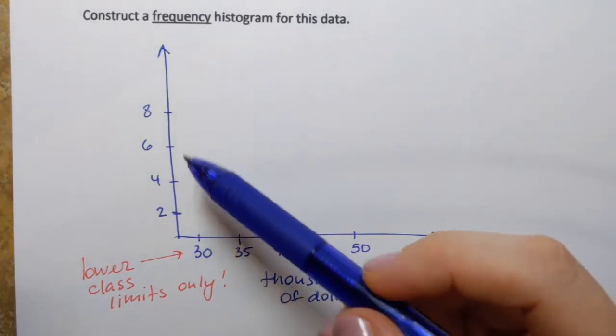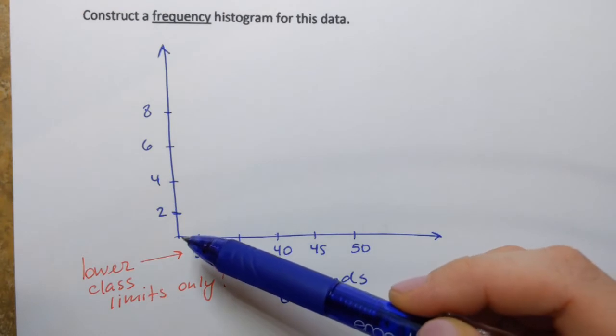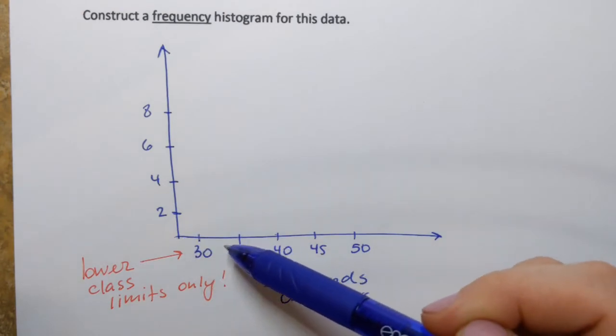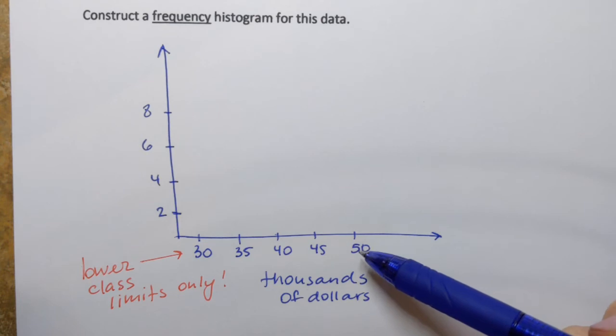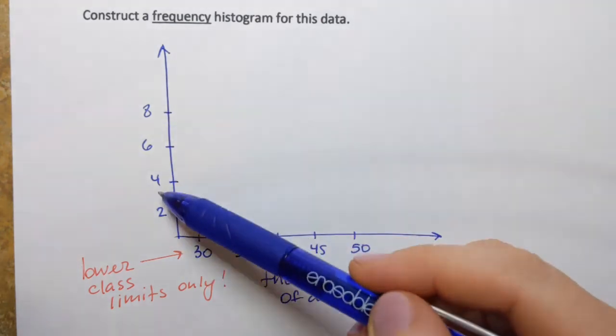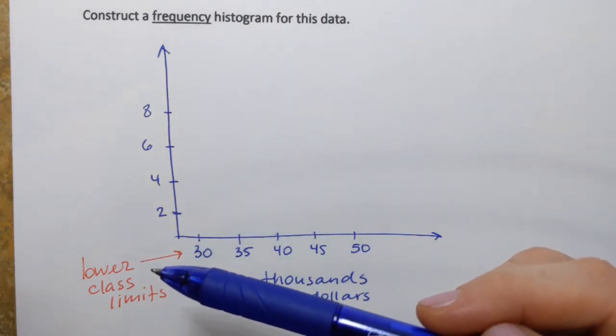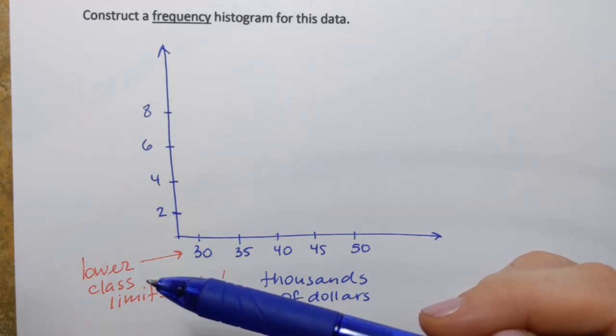And as we already said each axis has to be labeled. So here we have thousands of dollars. These are the numbers along the horizontal axis and what are those numbers? Well, there are frequencies and that's exactly how we're going to label the vertical axis frequency.